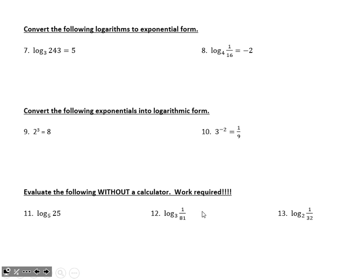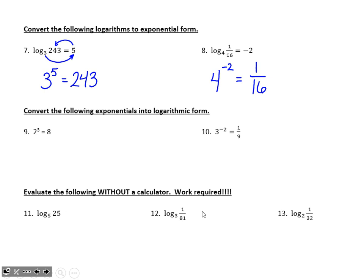Next we get into what a logarithm means — converting between forms. These don't have a lot of work to show, but if we're good with the patterns and exponents, we're in great shape. Number 7: base of 3, the logarithm equals 5, and the argument is 243 — so 3 to the fifth equals 243. Number 8: base of 4, perfect exponent is negative 2, that equals one-sixteenth — so 4 to the negative second equals one-sixteenth. If confused, use your calculator to check: type in 4 to the one-sixteenth and see it doesn't make negative 2.